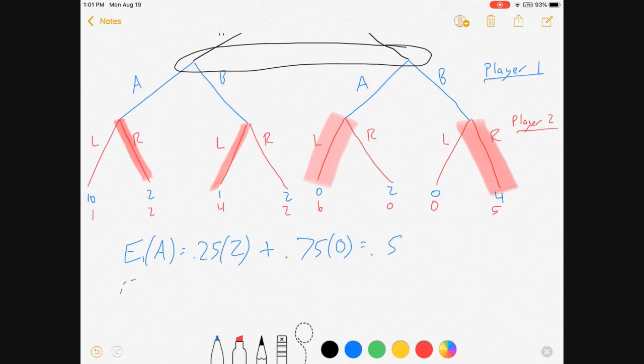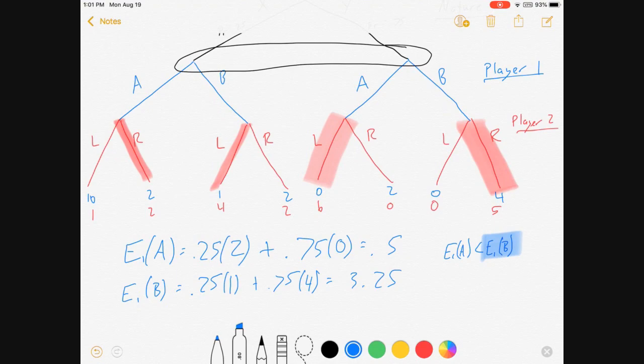Now what about for playing B? My expected payoff for player one of playing B is equal to 0.25 times one plus 0.75 times four, which comes out to be 3.25.